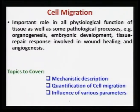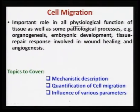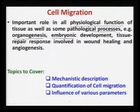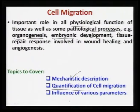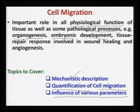Coming to the next topic: cell migration. Cell migration is important in all physiological functions of tissue as well as pathological processes like organogenesis or embryonic development. I will cover two things under cell migration: one is the mechanistic description, and the second is the quantification of cell migration, including typical speed values, time scales, and the influence of various parameters.